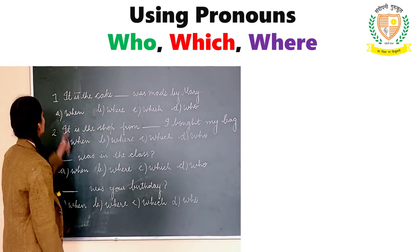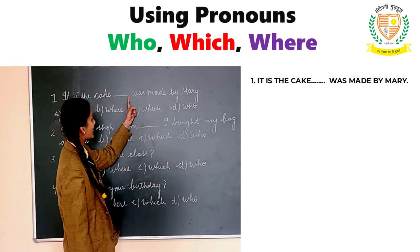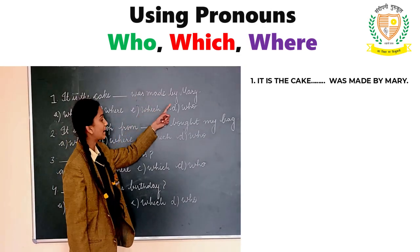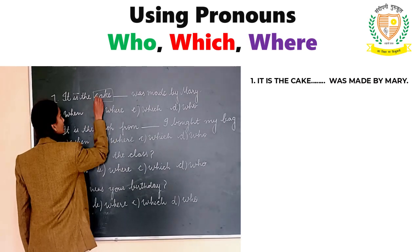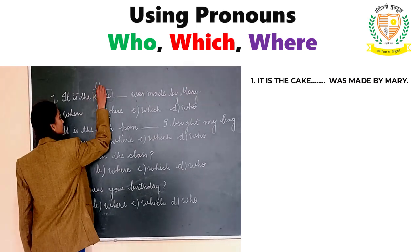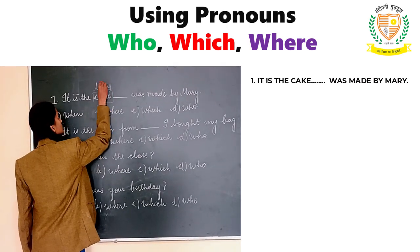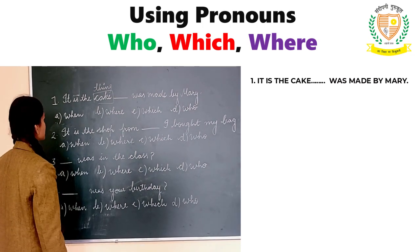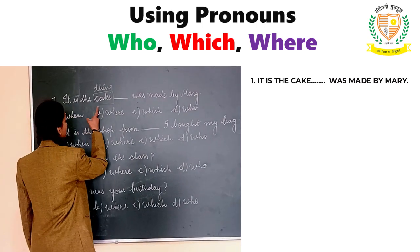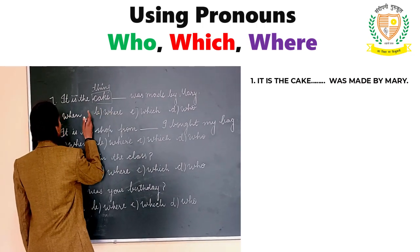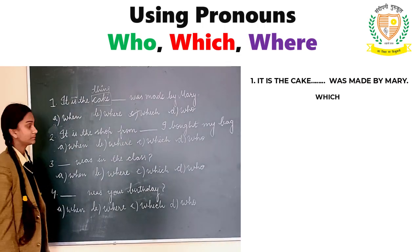So let us take an example. It is the cake that was made by men — so here, cake is a thing. So with a thing we use: it is the cake which was made by men.